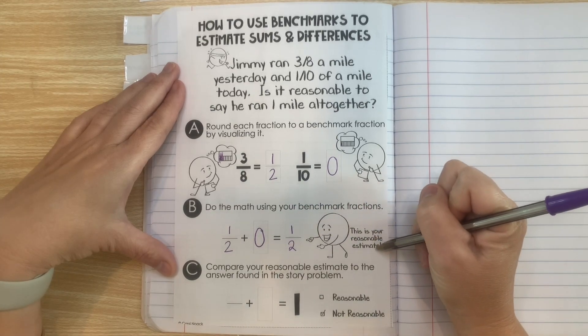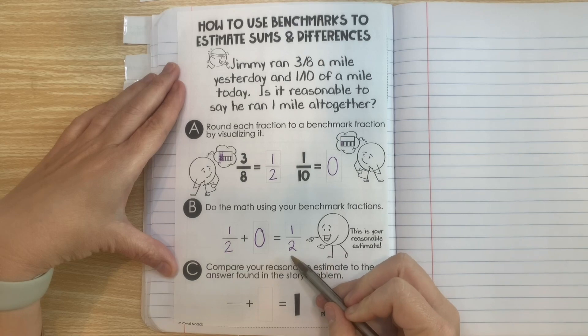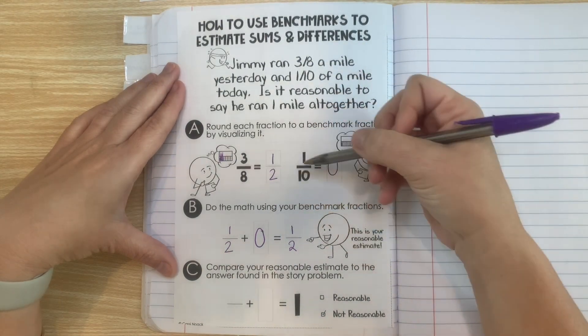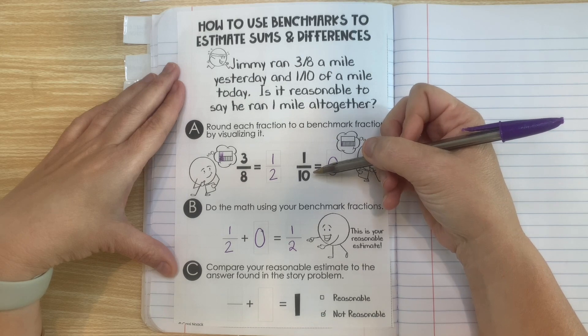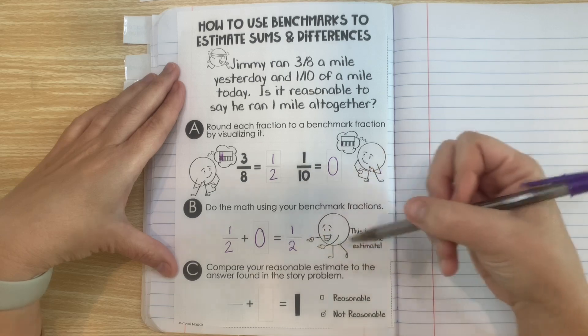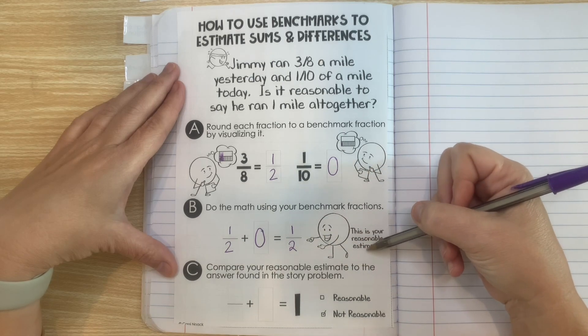This is your reasonable estimate. So if we wanted to say reasonably how much did he run and we used benchmarks to make it easier for us to do the math, we could say, well, he really only ran about a half a mile. A half is his reasonable estimate.